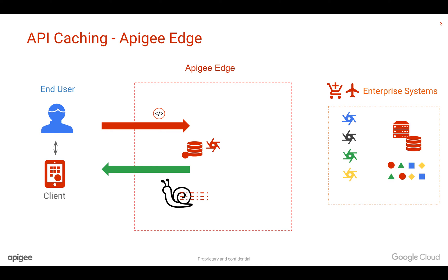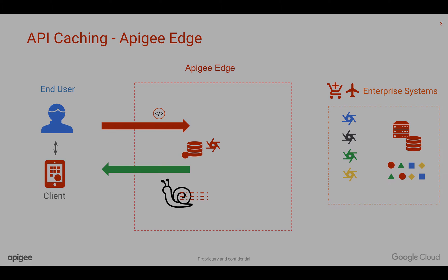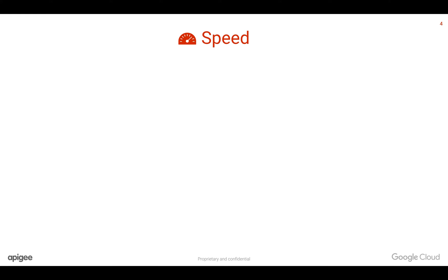Let's talk about various advantages of API caching in the Apigee Edge API management platform. Obviously, the first thing is speed. Even if your API takes a couple of seconds or a couple of thousands of milliseconds, once you cache the data, Apigee can return this data within a few tens of milliseconds.